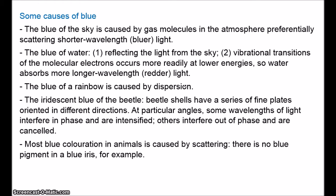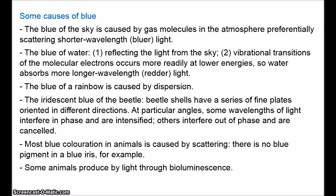Most blue colouration in animals is caused by scattering, just like the colour of the sky. Blue eyes result from scattering by the turbid medium in the iris. There is no blue pigment in the iris — in all eyes, pigment is brownish or black. Then there's the blue caused by bioluminescence, which is when organisms emit light as a result of chemical reactions involving the pigment luciferin.